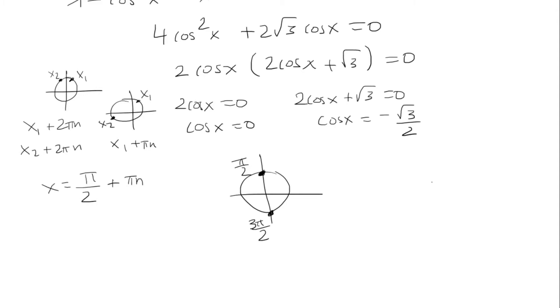Now we have to look at cosine is negative root 3 over 2. And that's going to be at these two spots. So that is going to be 5 pi over 6 and 7 pi over 6. So because they're a quadrant away, we're going to have them individually. So it'll be 5 pi over 6 plus 2 pi n and 7 pi over 6 plus 2 pi n.